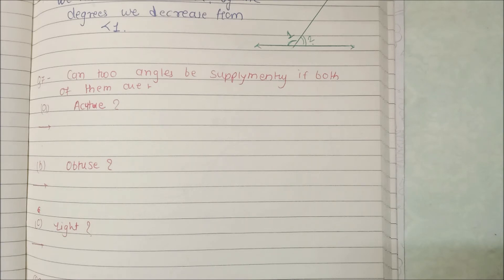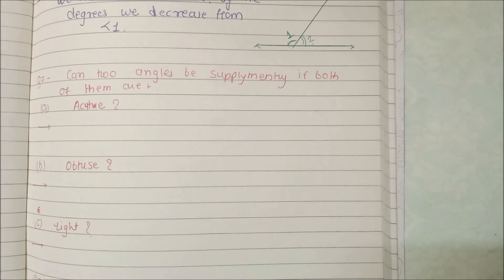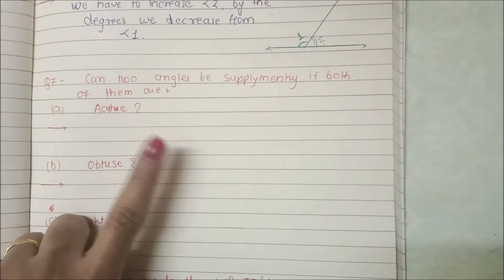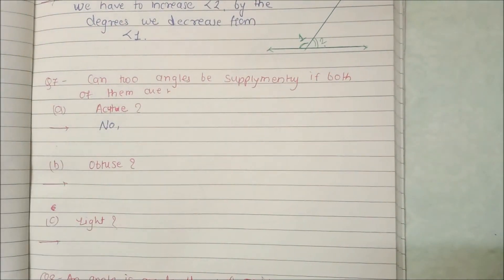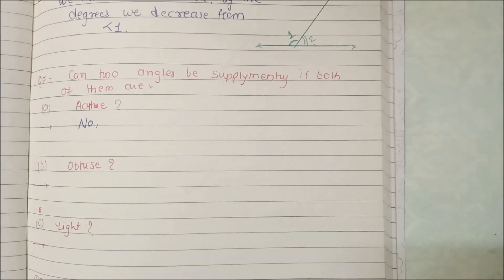So the question is: is it possible that two angles which are both acute can be supplementary? Let's take an example. Even if we take the highest possible acute angles — 89 and 89 — their addition will not give 180; it will only give 178. Therefore, two acute angles can never form supplementary angles. The answer is no — it is not possible. If both angles are acute, their sum cannot be 180 degrees, so they cannot form a supplementary pair.